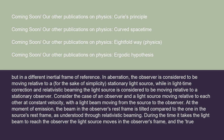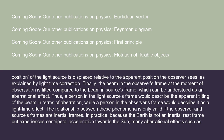Consider the case of an observer and a light source moving relative to each other at constant velocity, with a light beam moving from the source to the observer. At the moment of emission, the beam in the observer's rest frame is tilted compared to the one in the source's rest frame, as understood through relativistic beaming. During the time it takes the light beam to reach the observer, the light source moves in the observer's frame, and the true position of the light source is displaced relative to the apparent position, as explained by light-time correction. Thus a person in the light source's frame would describe the apparent tilting of the beam in terms of aberration, while a person in the observer's frame would describe it as a light-time effect.